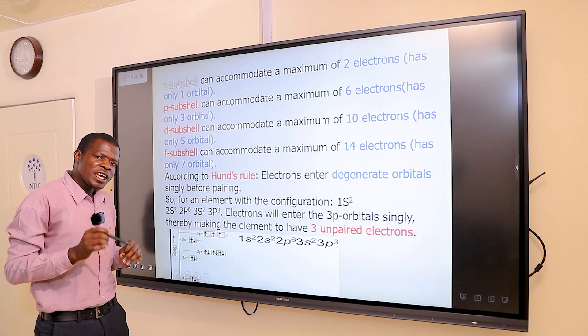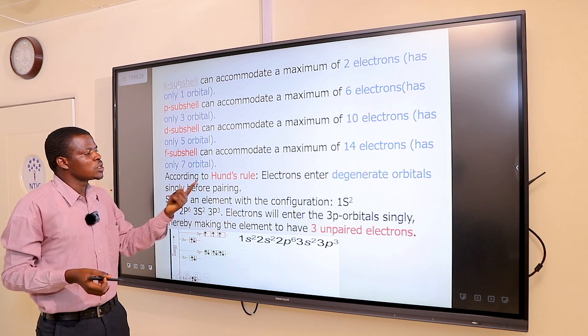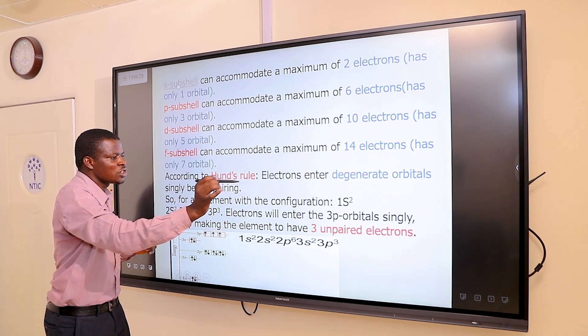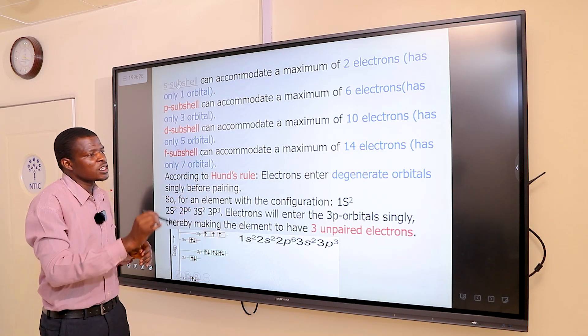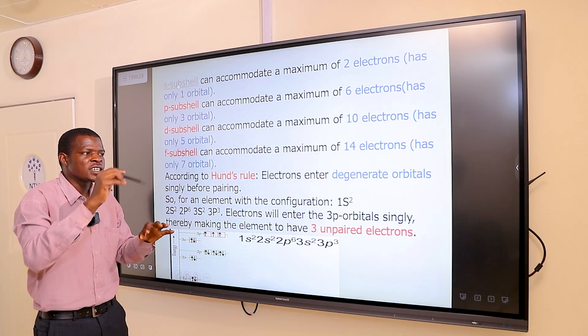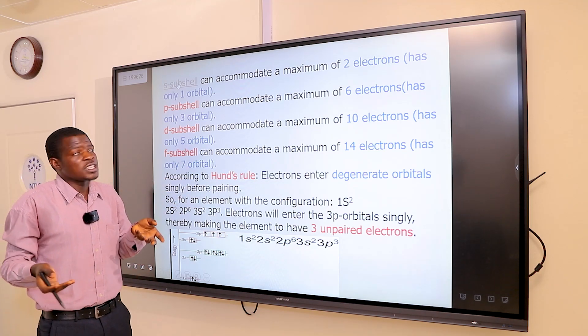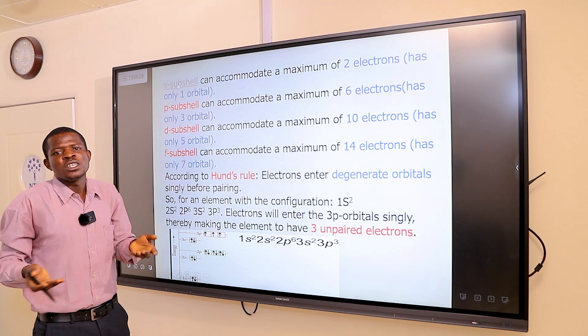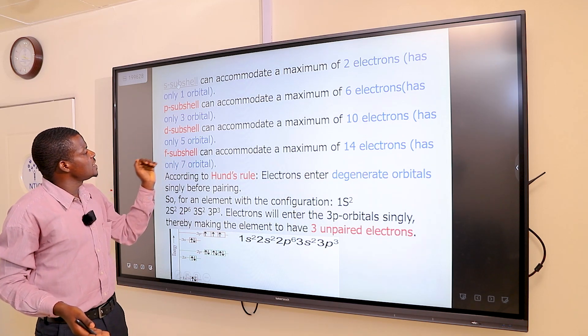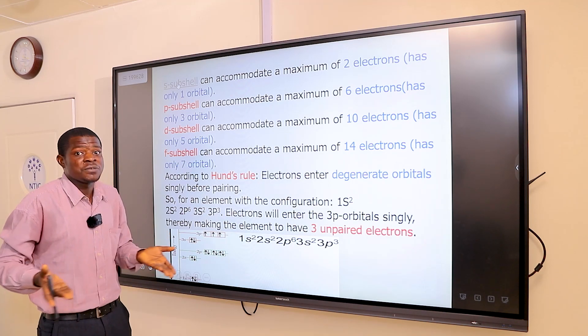When filling in orbitals with electrons, we use a rule called Hund's rule. The Hund's rule states that electrons enter degenerate orbitals singly before pairing. Degenerate orbitals are orbitals with the same energy. The S subshell has only one orbital, so we cannot call it degenerate. But for the P, D, and F, they have more than one, so all those orbitals are called degenerate.